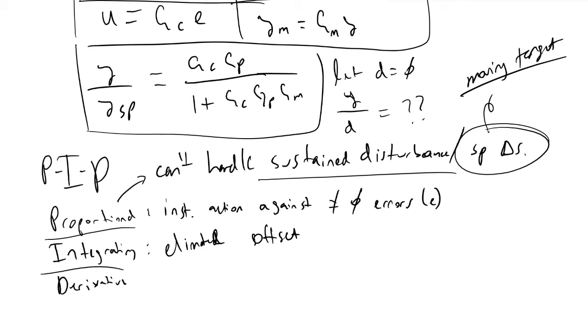Integrating controllers by themselves respond very slowly to perturbations, though they will get you no offset. By itself, integrating dynamics is too slow commonly to be used in practice. So it's very common you'll see PI controllers where proportional and integrating are coupled together in our controller function.